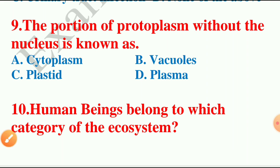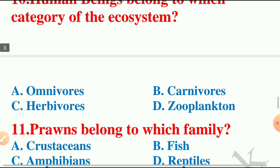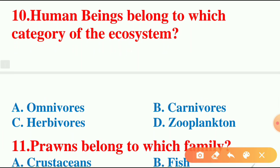Moving on to the next question: human beings belong to which category of the ecosystem? The options are omnivores, carnivores, herbivores, or zooplankton. The answer is omnivores. Carnivores are animals which only eat meat, and herbivores are animals which only eat plant foods.